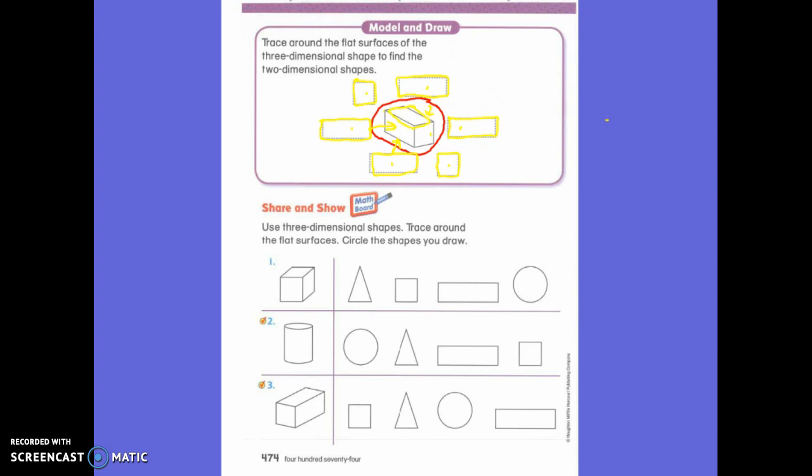If I were to pull apart a cube, would I need any triangles? No. Would I need any squares? No. So what am I going to do? Circle it. Circle it. Would I need any rectangles? No. Would I need any circles? No. That is what we're going to do today. Okay.